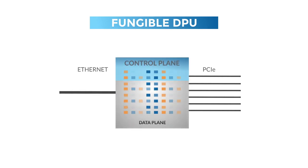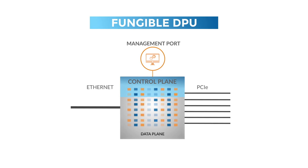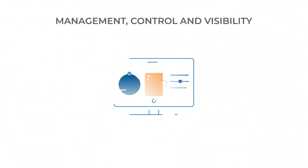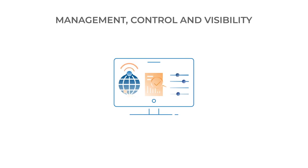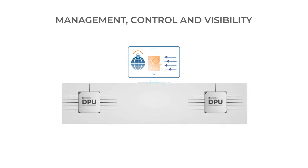The Fungible DPU is designed to have a control plane that is distinctly separate from the data plane, serviced by a set of processors controlled through the management ports. To manage the control plane, Fungible offers a set of management services known as the cluster services.